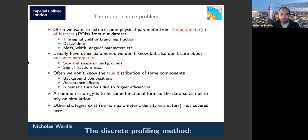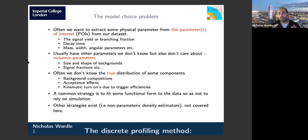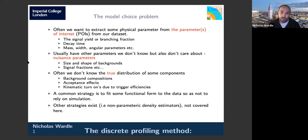This is typically the case when we have some background process that's very hard to simulate — for example from QCD processes — or there could be acceptance effects from cuts, or kinematic turn-on from trigger efficiency. A common strategy is to fit some functional form to the data rather than relying on simulation.